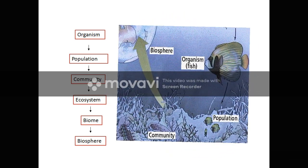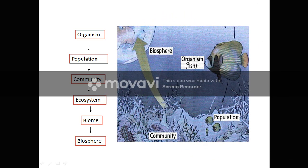Here is a diagrammatic representation of the aquatic ecosystem. It starts with an individual organism like a fish, then a fish population, then several species living together in a community, which forms part of a biome, and the biome is part of the biosphere.